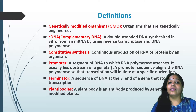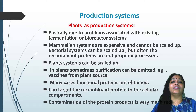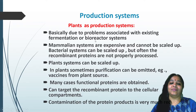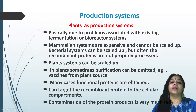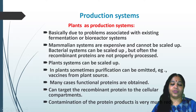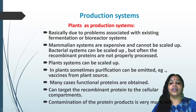A plantibody is an antibody produced by a genetically modified organism. Plants were chosen as production systems due to problems with existing fermentation or bioreactor systems. Mammalian systems are very expensive and cannot be scaled up. Bacterial systems can be scaled up but recombinant proteins are often not properly processed. Plant systems can be scaled up; purification can sometimes be omitted (e.g., plant-derived vaccines), functional proteins are obtained, recombinant proteins can be targeted to cellular compartments, and contamination is greatly reduced.